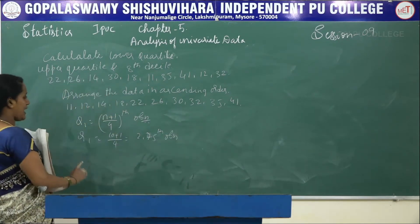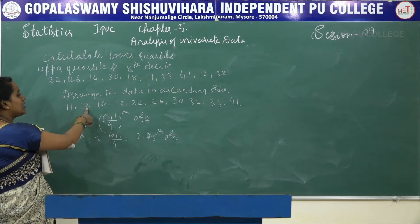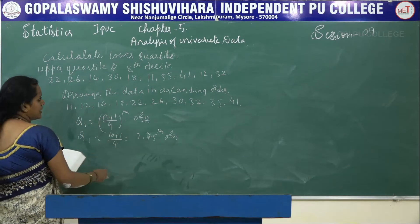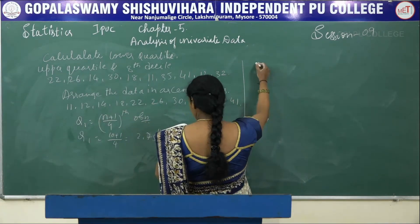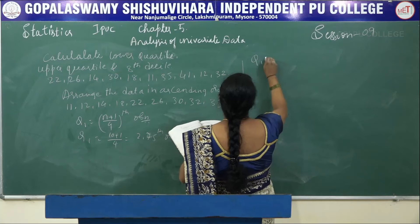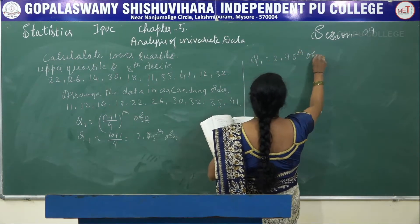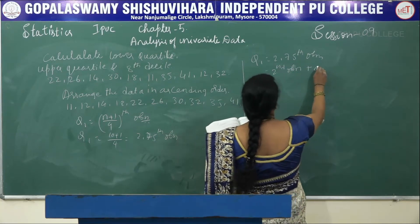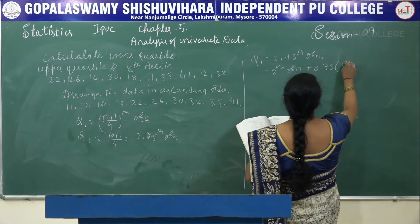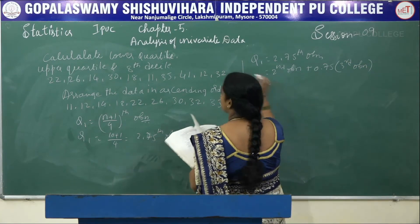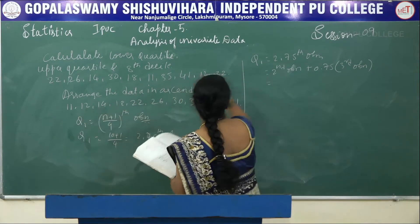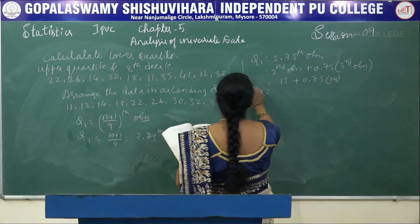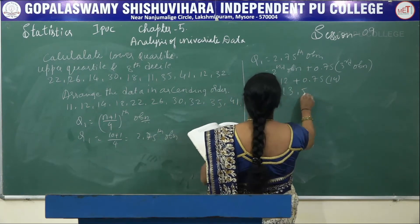To find Q1, it is the (n+1)/4 th observation. So Q1 = (10+1)/4 = 2.75th observation. We do not have 2.75th directly, so Q1 = 2nd observation + 0.75 × (3rd observation) = 12 + 0.75 × (14 − 12) = 13.5.